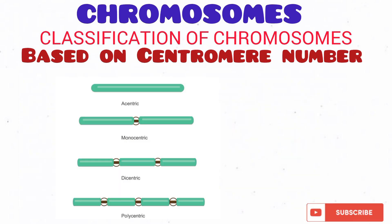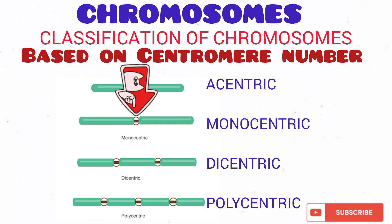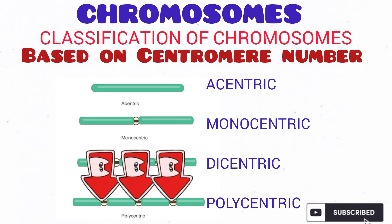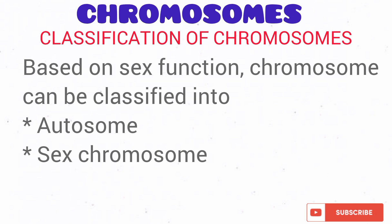Let's talk about classification based on centromere number. If the chromosome has no centromere, it is called an acentric chromosome. If it has one centromere, it is called a monocentric chromosome. If the chromosome has two centromeres, it is called a dicentric chromosome. And if it has numerous centromeres, it is called a polycentric chromosome.